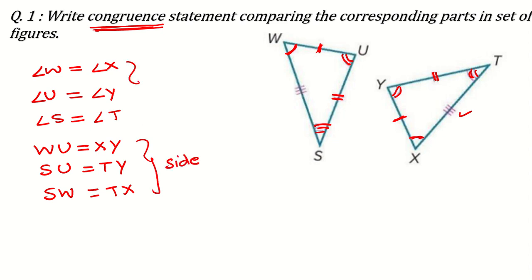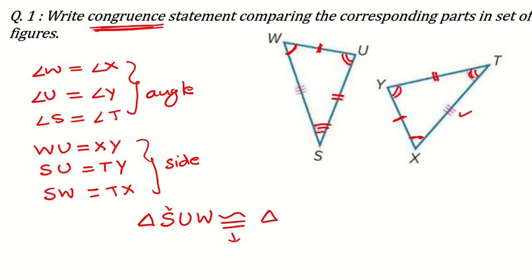The first three lines are about the angles and this is all given in the picture. Now at last we have to write the congruency statement. The first triangle you can write in any order — I am writing in alphabetical order: S, U, W. After this you have to be careful. This is the congruency sign. Angle S equals T, so first letter is T. Angle U equals Y, so second letter is Y. Angle W equals X, so third letter is X. Triangle SUW is congruent to triangle TYX.